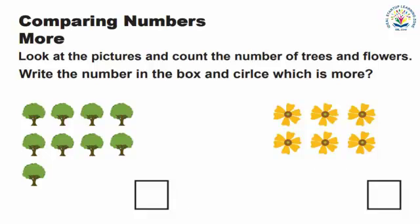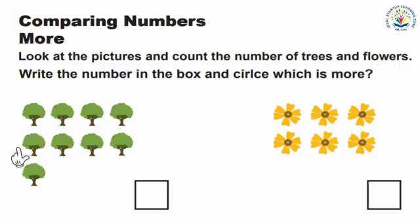Comparing numbers — more. Look at the pictures and count the number of trees and flowers. Write the number in the box and circle which is more. Count trees with me: 1, 2, 3, 4, 5, 6, 7, 8, and 9. There are 9 trees.